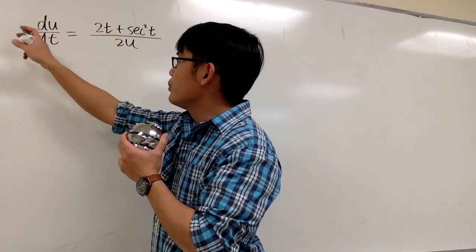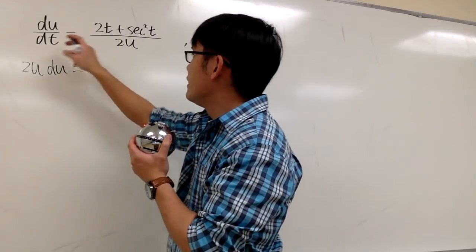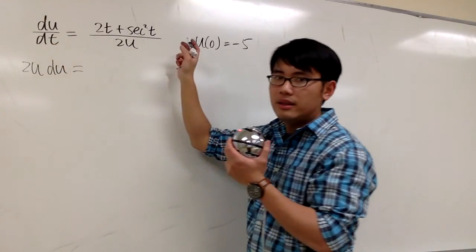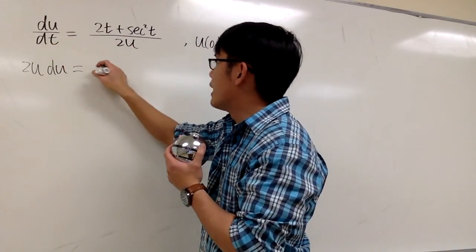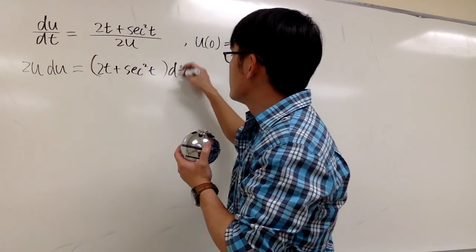So multiplying 2u on both sides, we get 2u du on the left-hand side, and this equals, bringing the dt to the right-hand side, we have (2t + sec²t) dt.